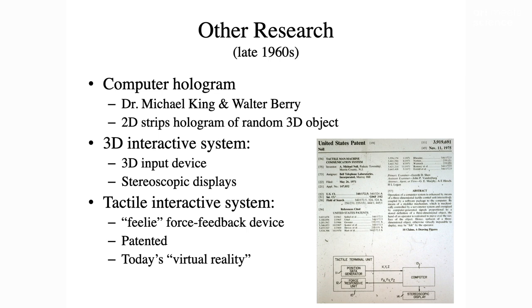Doing computer art and animation was not my full-time job. I did other things in the later part of the 60s: I worked with Michael King and Walter Byer to do a computer hologram, one of the earliest uses of computers to actually create a hologram, done on one of my random 3D objects. I went on to do interactive systems with a 3D input device — a three-dimensional joystick — with stereoscopic displays, then used motors on the input device to give people force feedback, so you could hold this 3D joystick and feel as if you're bumping into things and feeling around them. In many ways, this became what is today's virtual reality. The patent was issued very broadly: 3D input, 3D output, force feedback output, digital computer.